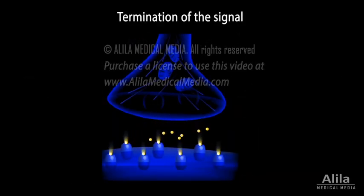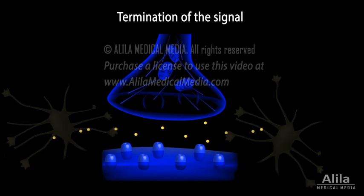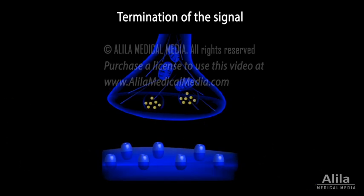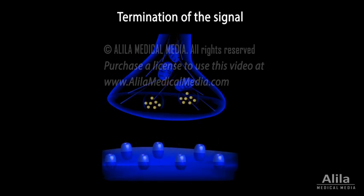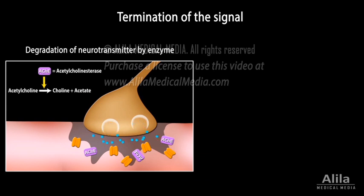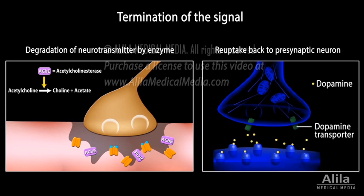A neurotransmitter binds to its receptor for only a millisecond or so. It then passively diffuses from the synapse and is taken up by nearby astrocytes for recycling. If the presynaptic neuron continues to fire and release more neurotransmitters, new molecules will bind and again activate the receiving neuron. If the presynaptic signal stops coming, the transmission will eventually stop. There also exist mechanisms to actively remove neurotransmitters from the synaptic space to avoid overstimulation, including degradation by an enzyme present in the synapse, and reuptake, where the neurotransmitter is transported back by a transporter protein to the presynaptic neuron for reuse.